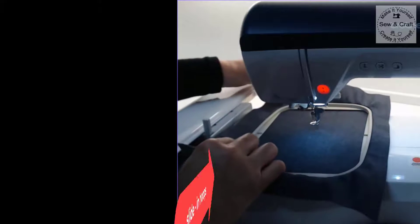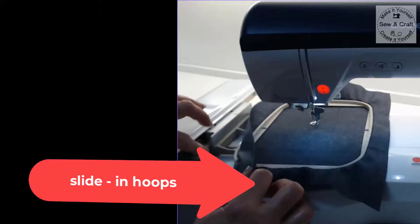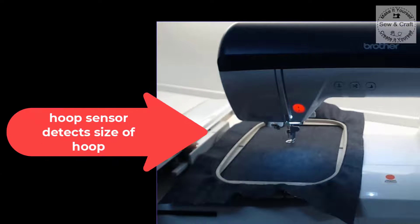Now let's take a look at how to use the machine to embroider. First, the machine has slide-in hoops which lock in place so they can't move. There's a hoop sensor that will detect the size of the hoop on the machine so when you select a design it will tell you whether that hoop will be suitable or not.